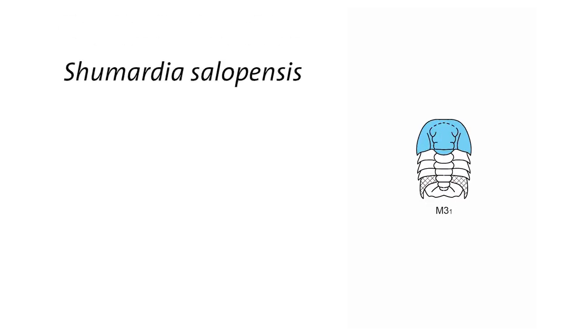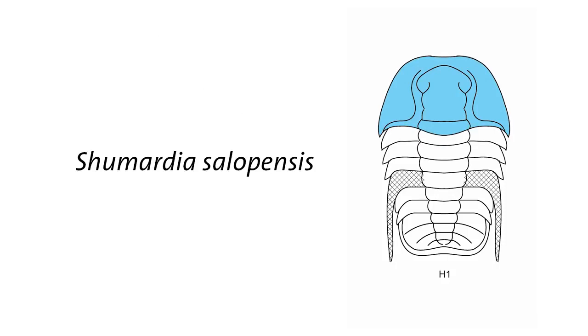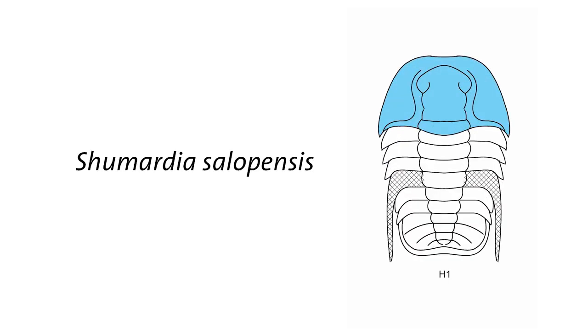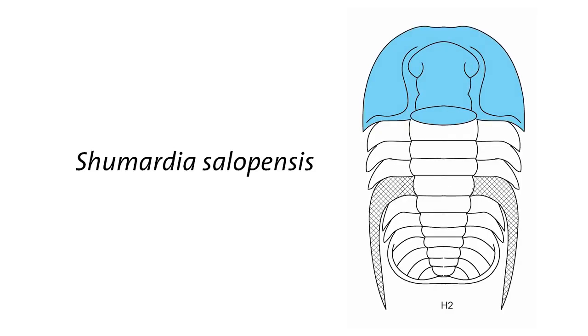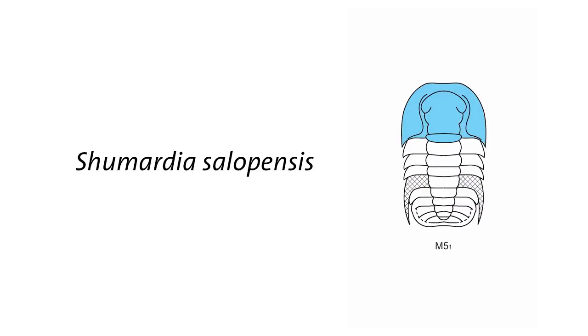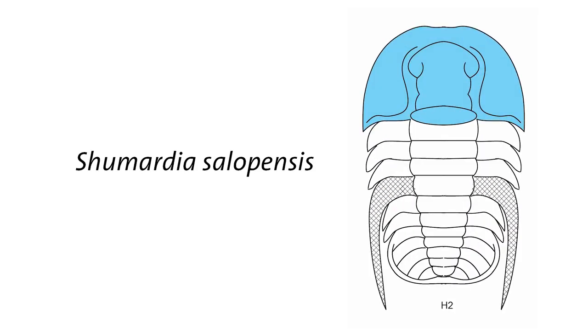This is an example of trilobite growth for Shumardia salopensis. This is a really classic example. This was first described back in the 1800s. Shows up in textbooks and papers. And as this winds through and shows you some of the stages during development of this trilobite, you're probably noticing two things. One, the number of segments is increasing. The other thing is that there's this one segment that's got a really big spine hanging off of it, and that seems to be moving forward in the body during development.